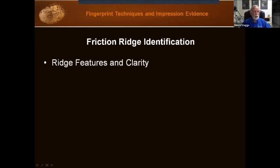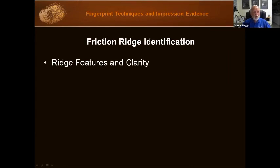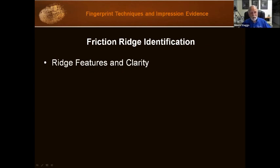Every friction ridge is a unique formation. One of the complexities of the identification process is the various levels of clarity that may be present in the prints being compared. The level of clarity will affect the type of detail being compared and the amount of detail needed to make an identification. This is why a standardized answer as to how much detail is needed is impossible to give — every comparison is unique, just as the friction skin itself is unique.